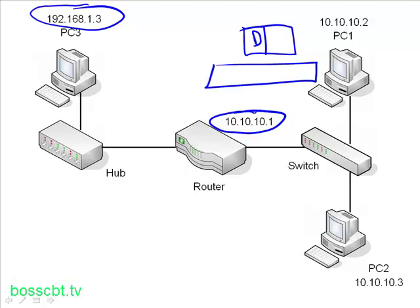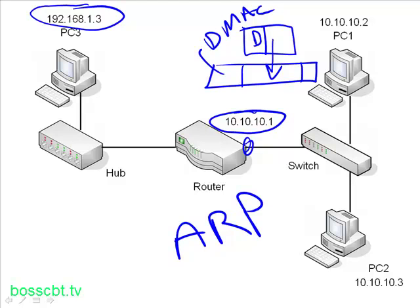Just like last time, PC1 is going to create an Ethernet frame because this is an Ethernet network, and the IP packet goes into that frame. This time, the destination MAC address is going to be different — it needs to be the MAC address of the router. So PC1 uses ARP to query the network to find out the Ethernet address of the router, asking for the MAC address that corresponds to 10.10.10.1, which is its default gateway. It gets a reply telling it that IP address corresponds to the MAC address of the router's interface.